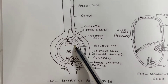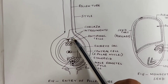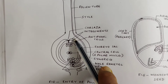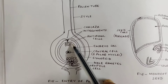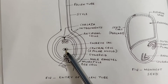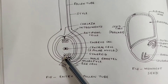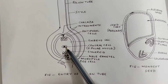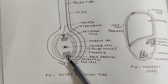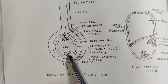The three cells on the chalazal end are called antipodal cells. These two layers are the integuments, which after fertilization become the testa and the tegmen. The central cell is made of two polar nuclei and is a diploid cell — all others are haploid. These are the two male gametes developed from the pollen tube.